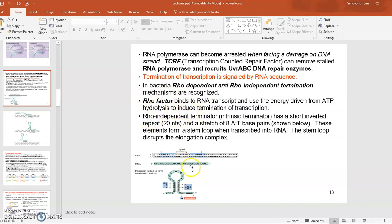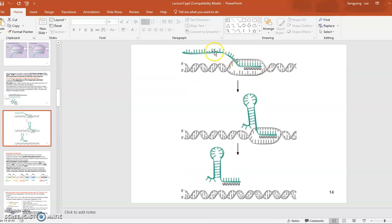The rho independent mechanism has that intrinsic terminator which is the sequence, about 20 nucleotide long and has a stretch of eight A's and eight U's that can form this hairpin. RNA is transcribed and at the end, that hairpin structure will be formed, and then that hairpin structure tells RNA polymerase, which is located probably around here, that's the end of the transcription that falls off.